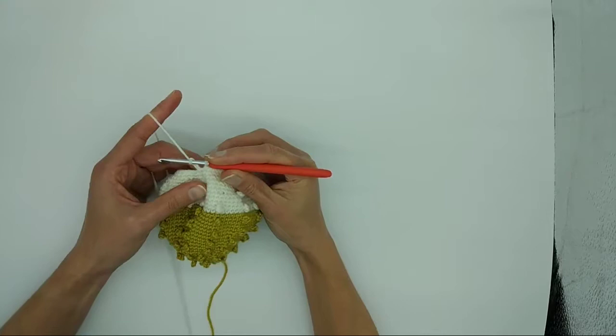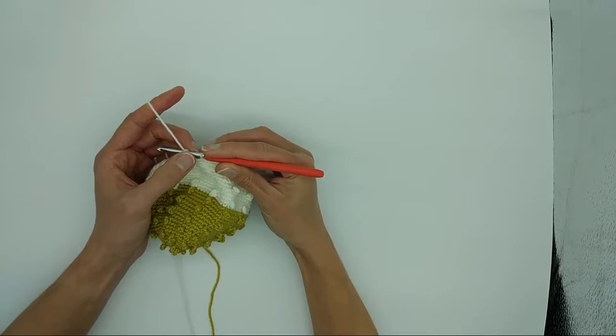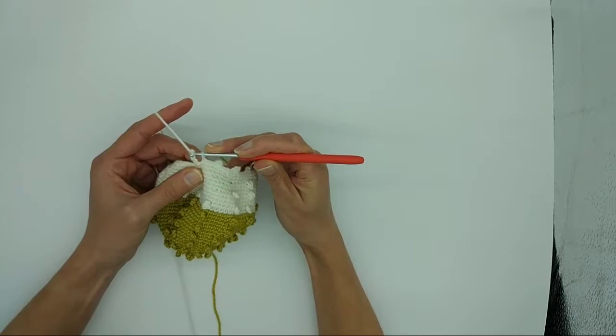Now to complete the stitch, we're going to yarn over and pull the yarn through both stitches on the hook. So we yarn over and pull through the first loop and the second loop. And that's one completed picot stitch.